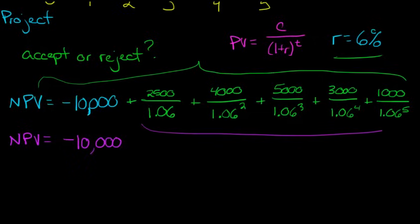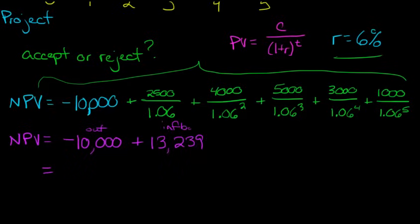And then all these cash flows here, when we add that all up, it's going to add up to $13,239. So now we put, now this is where the net part comes in. We net these together. We're netting the cash outflow. This is going out at the beginning of the project. And then we've got the inflows. This is the discounted value of the inflows. We take it together.